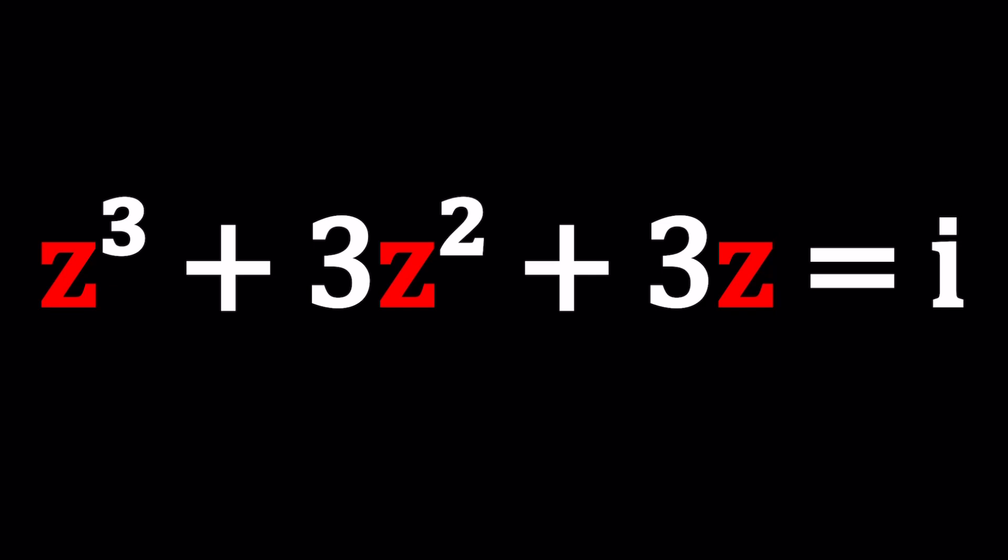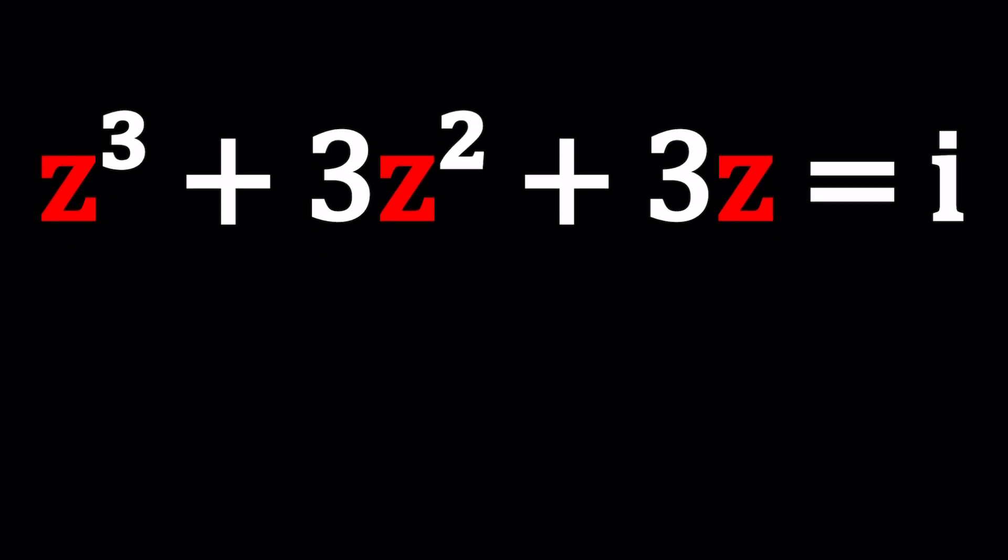So we have this cubic equation and we're going to solve for z. One of the things we can do is use the cubic formula. But to be able to use the cubic formula we need to get rid of z squared. So we could go ahead and do the following: replace z with w minus 1 and that should give us something nice. And you'll be surprised.